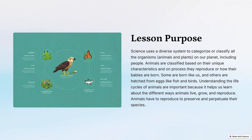Just like us humans, animals also need to reproduce so their species can continue and not disappear. Similar to people, animals need to keep reproducing so they don't become extinct. That is the purpose of our lesson for this week — we're going to learn the different life cycles of animals.